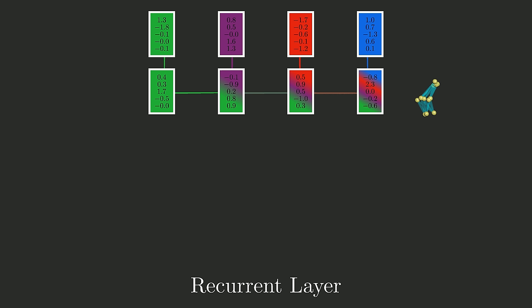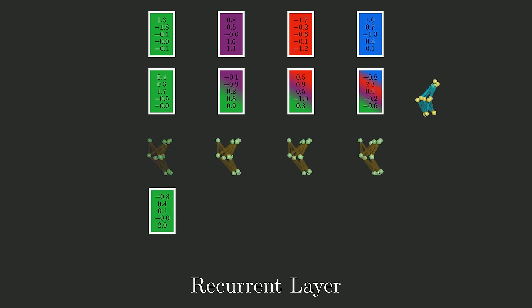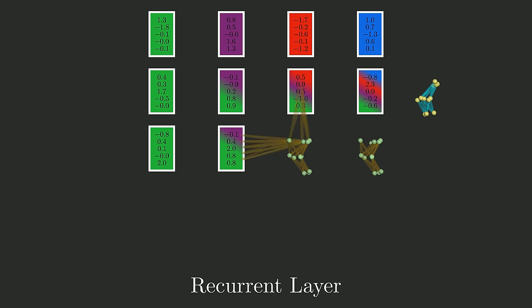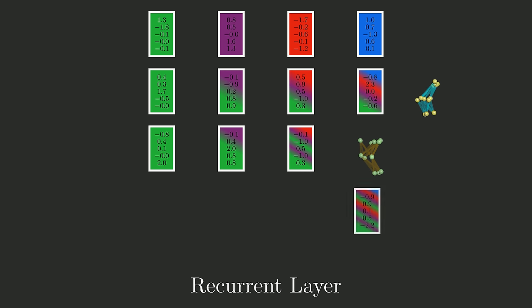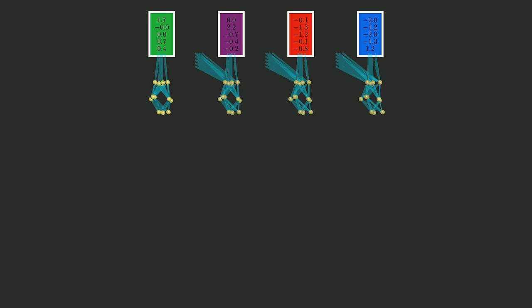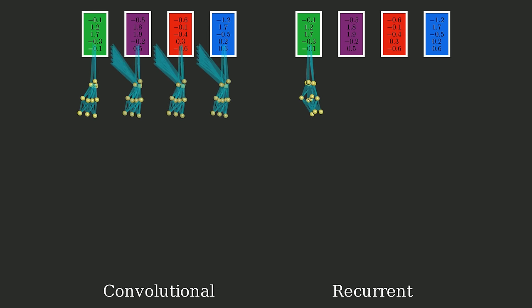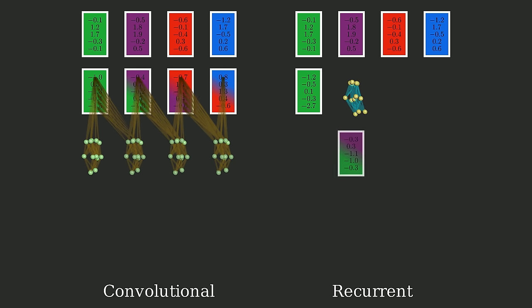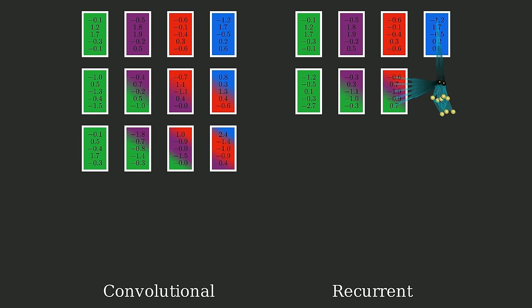Or at least it would be if it weren't for two small problems with RNNs which make them almost impossible to use in practice. The first problem is that while a recurrent layer uses the same amount of compute as a convolutional layer, that compute cannot be parallelized across multiple processes. Even if you have lots of processes available, you can't begin evaluating the neural net on an input until all of the previous steps have finished. Compare this to a convolutional layer where you can run the neural net on all inputs at the same time. Since modern hardware such as GPUs are highly specialized for parallel computation with thousands of processors, RNNs are actually a lot slower than CNNs in practice.